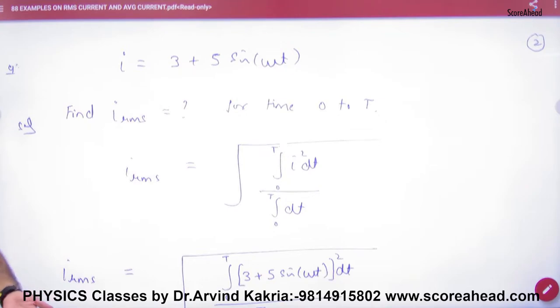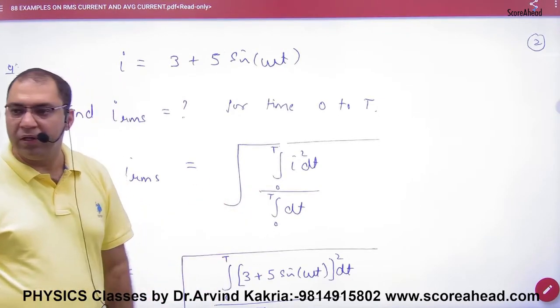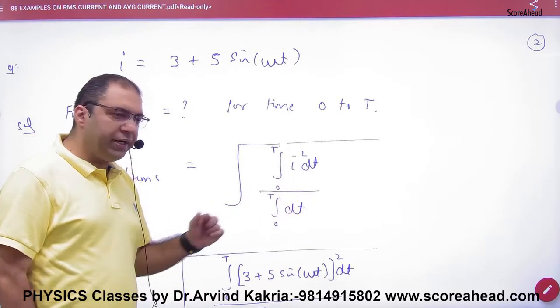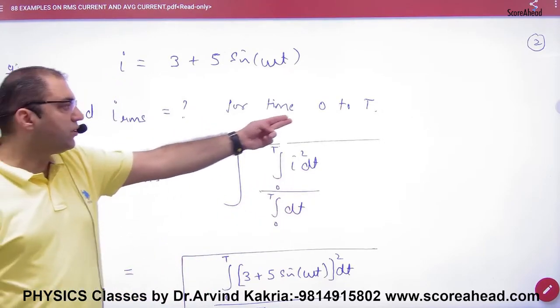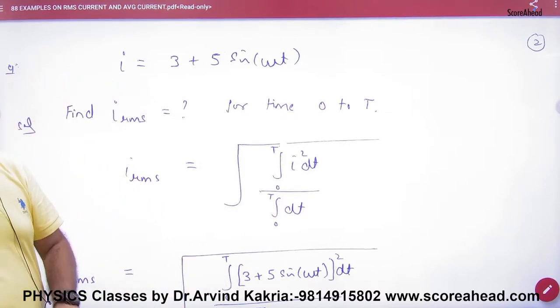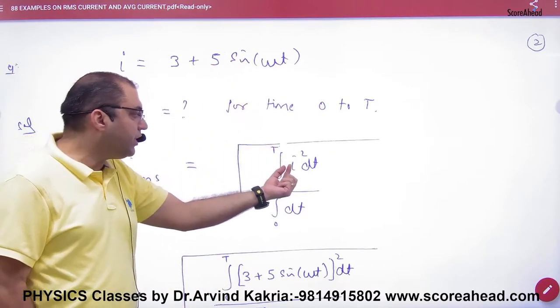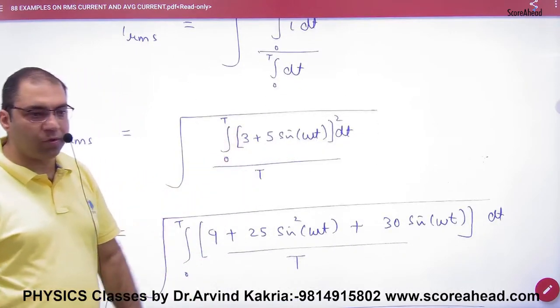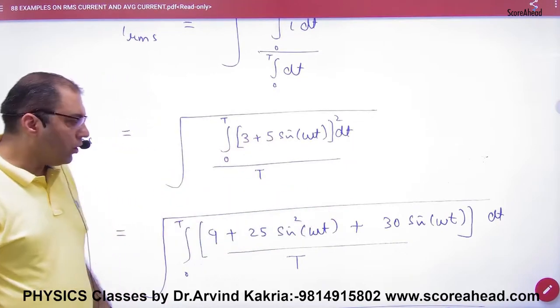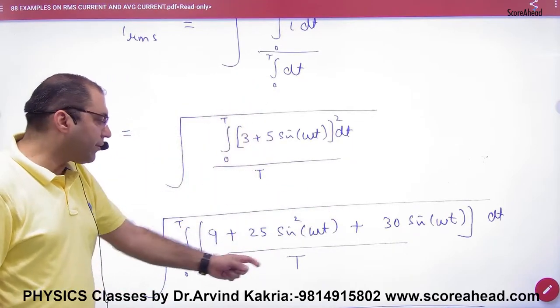Write the formula: I_RMS = √(∫I²dt / ∫dt) where integration limits are 0 to T. Put this I value. I² becomes A² + B² + 2AB when opened. And the denominator integration is T.